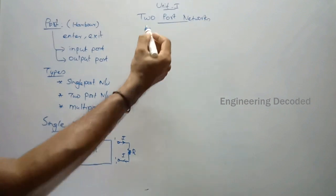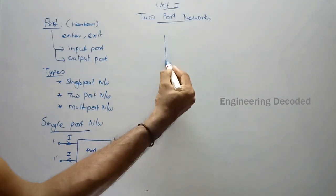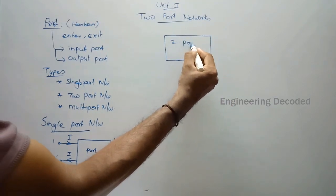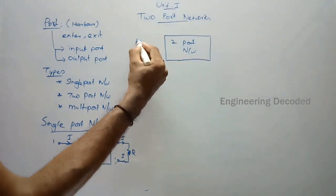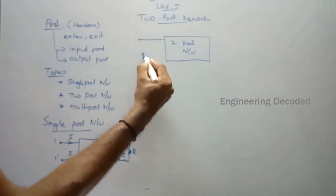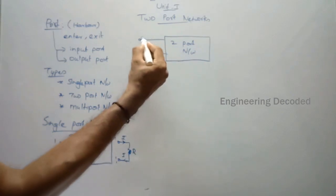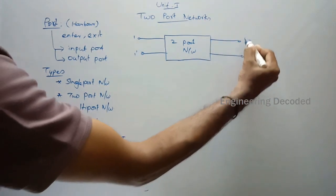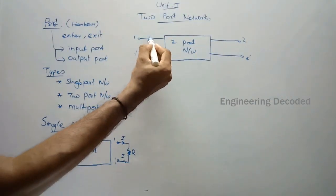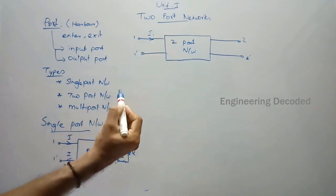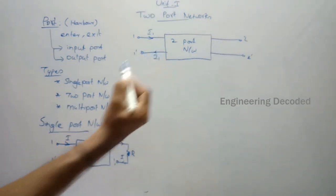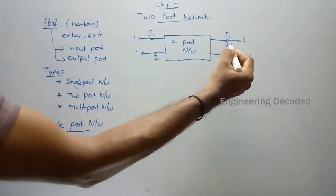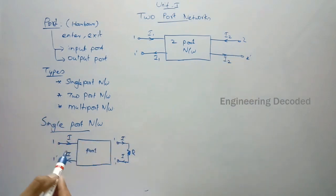Now we can see what is a two-port network. Let me draw another box and name this as a two-port network. Like what we have seen in the single port network, I have port 1 and 1-dash, and I am having another port 2 and 2-dash. Through this first port I am going to give a current I1 and I will be receiving the current I1. Similarly, through the second port I am going to give a current I2 and I am going to receive the current I2.